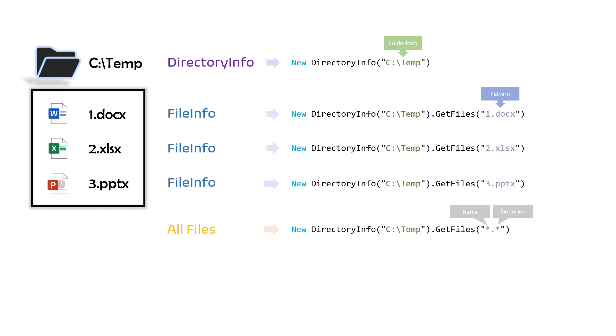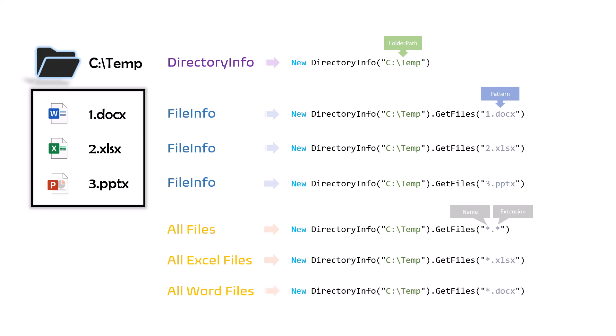Let's see how to get, for example, only the Excel files from a directory. I use the same statement, but now I set star for the name — meaning I want to get each file no matter what the name is — but after the dot I set the Excel extension. This means I want to get each Excel file from the directory. Similarly, for Word files I use the Word extension, and in this way I will get all Word files from the directory.